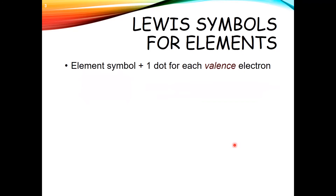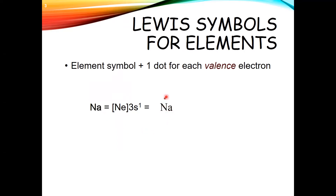The way this works is you just take your elemental symbol and you put one dot around it for each valence electron. For example, if I have sodium, this is going to have an electron configuration equal to that of neon plus one valence electron in the 3s orbital. To draw sodium's Lewis symbol, we're just going to draw the sodium element and put a single dot on it. The dot could be on the right, on the bottom, or on the left — it really doesn't matter.